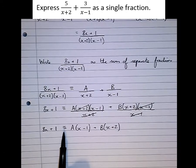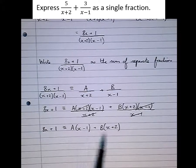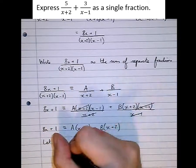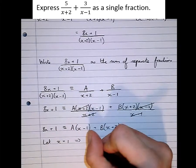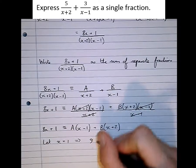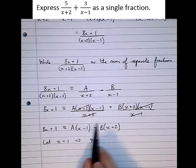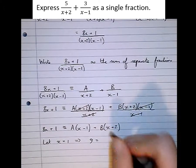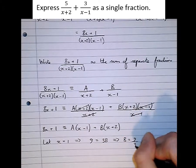Notice this is an identity sign, not just an equals, meaning this works for any value of x you substitute in. There are particularly convenient values of x that make terms disappear. If we let x equal 1, the A term disappears since (1 − 1) = 0. So 8(1) + 1 = 9 equals 3B, which means B = 9/3 = 3.